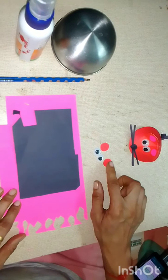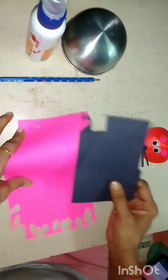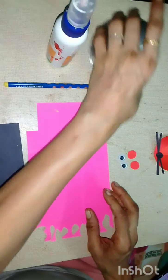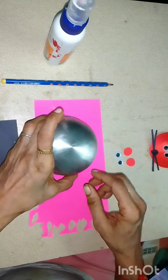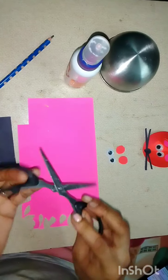For making a paper mouse, you need two red circles, two eyes, one black paper, one pink paper. You can use anything for making a circle. Here I am using a cap, a glue, pencil, and one scissor.